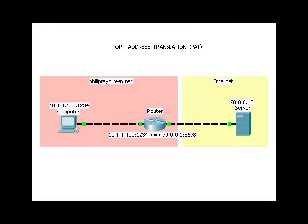Here we are on the philiparaybrown.net domain and we want to send a packet to a server on the internet. The router has been configured as PAT. The computer has an IP address of 10.1.1.100 with a port number of 1234.